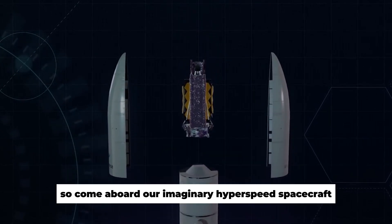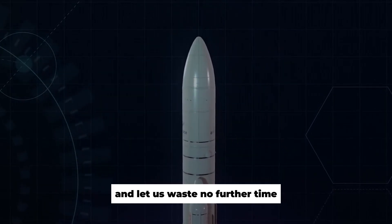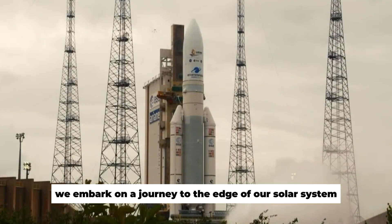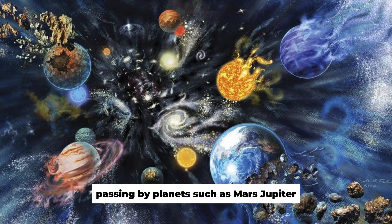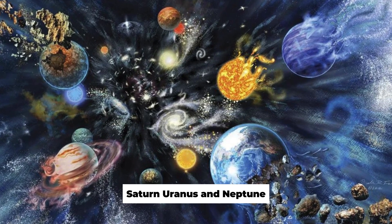So, come aboard our imaginary hyperspeed spacecraft, and let us waste no further time. We embark on a journey to the edge of our solar system, passing by planets such as Mars, Jupiter, Saturn, Uranus, and Neptune.